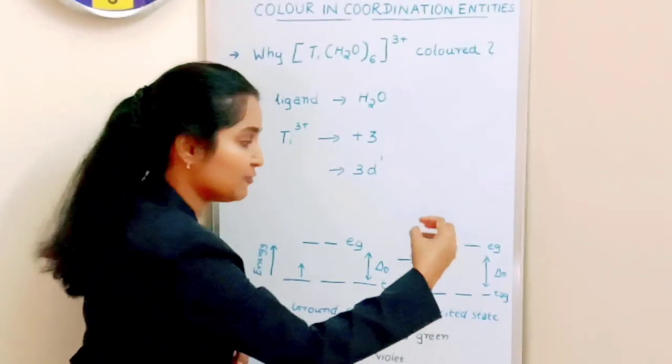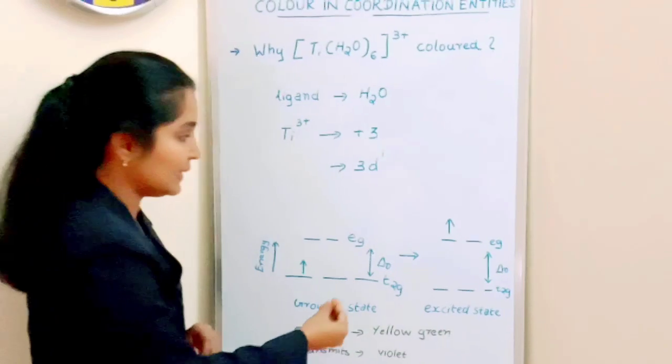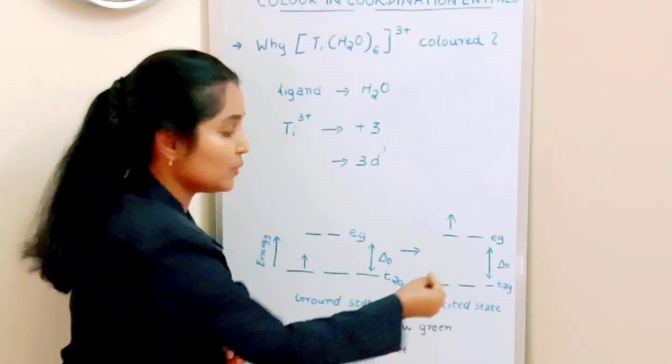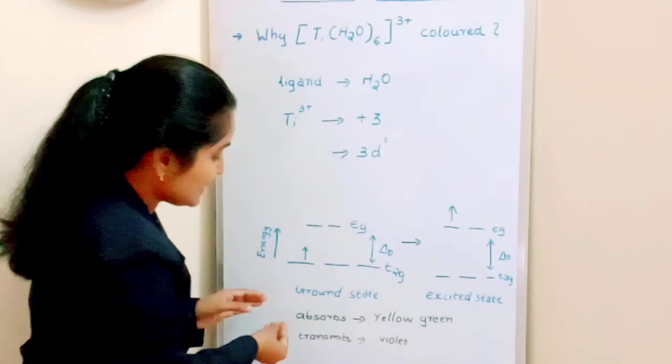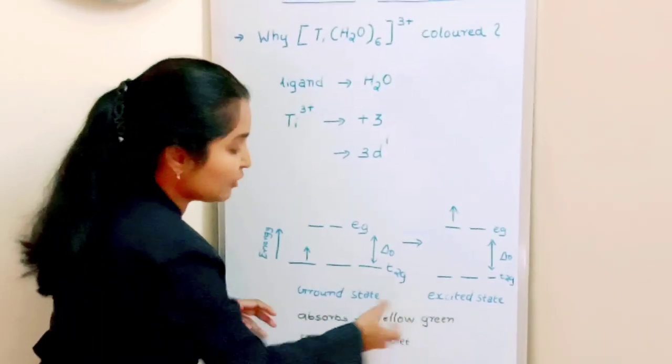That frequency of radiation absorbed by the electron during the jump from one d level to another d orbital falls in the visible region of yellow-green.